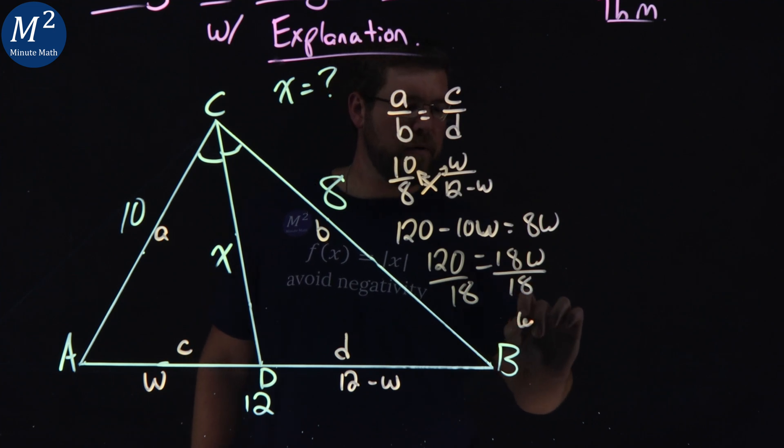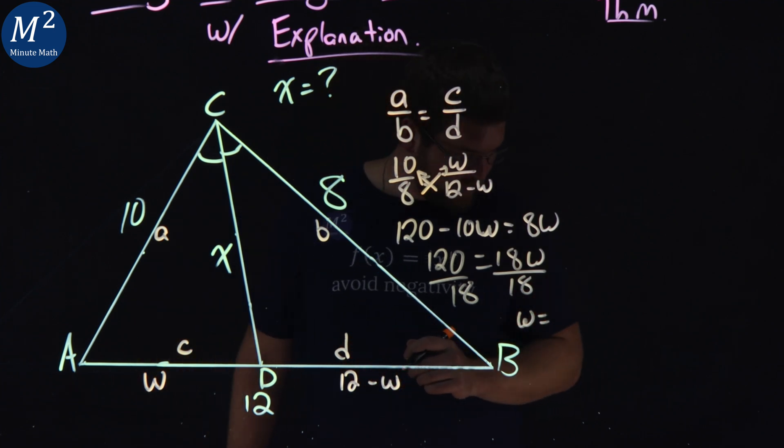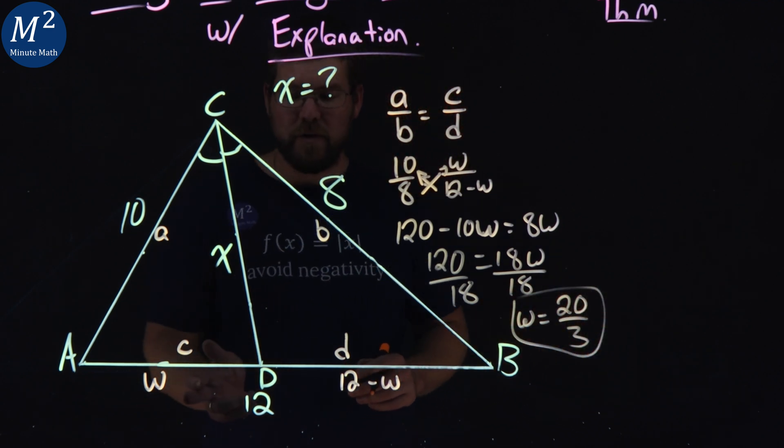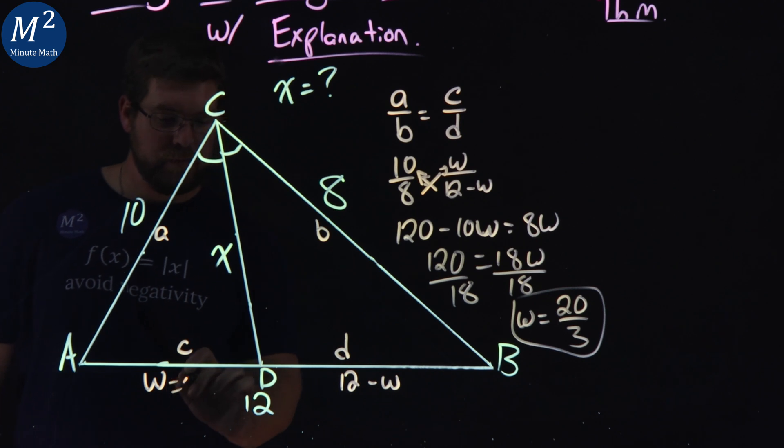Divide both sides by 18, and we have a w value. I'll put it right here. W is equal to, and I wrote it down as a fraction here, 20 over 3. So we have a length here of 20 over 3.